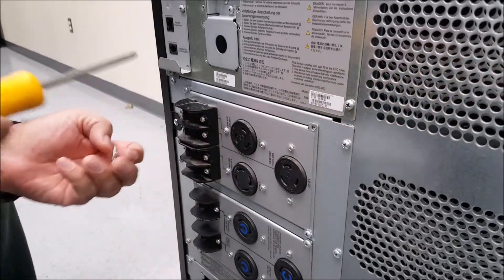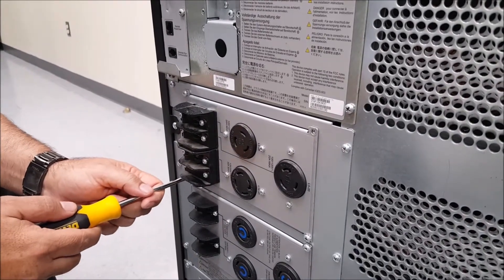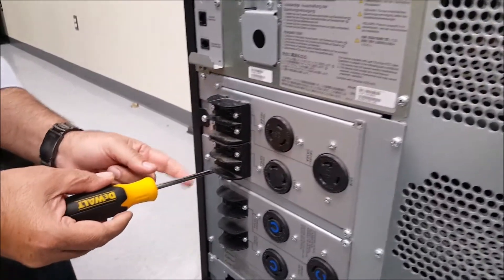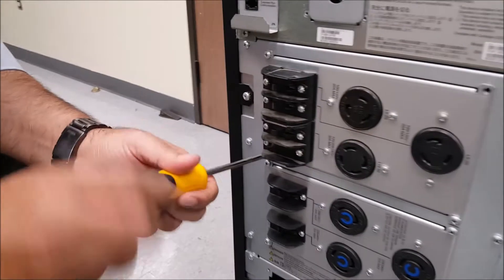Once the Symmetra UPS has been safely de-energized, you'll begin by removing the screws at the four corners of the PDU panel or blanking plate. For this video we'll be using a PDU panel as our example.